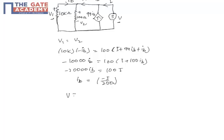So V is equal to 100, we are considering V2 here. V will be equal to V2 since they are in parallel. 100 into I plus 100 Ib. So that will be equal to 100 times I plus 100 times minus I over 200, which equals 50 I.